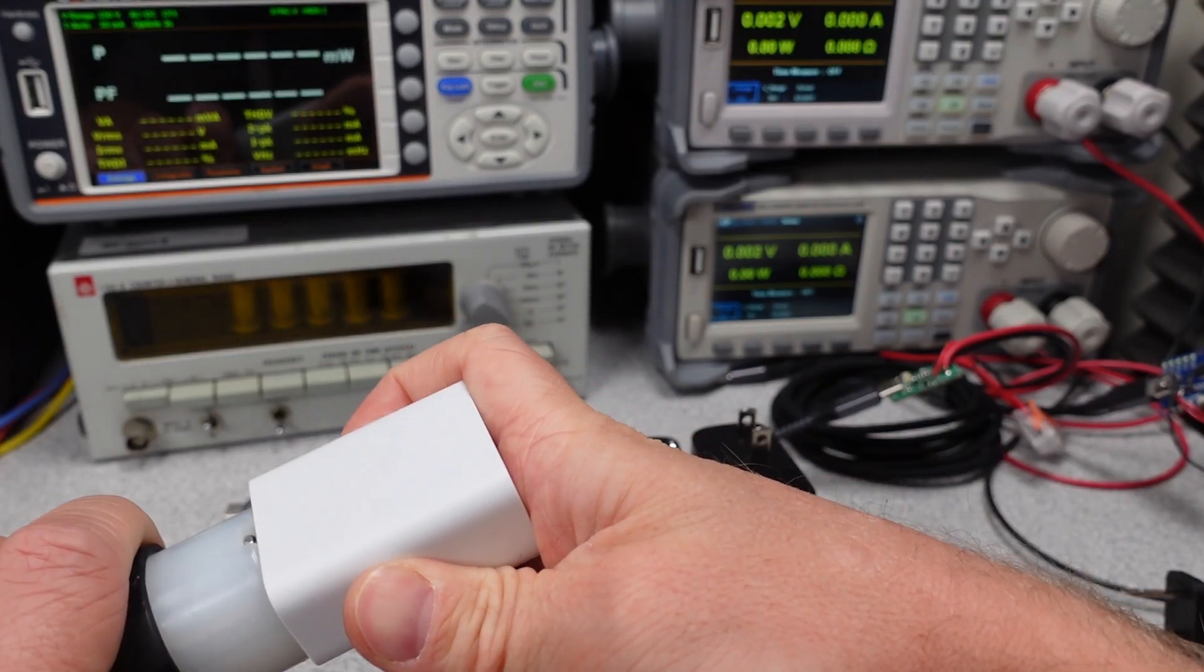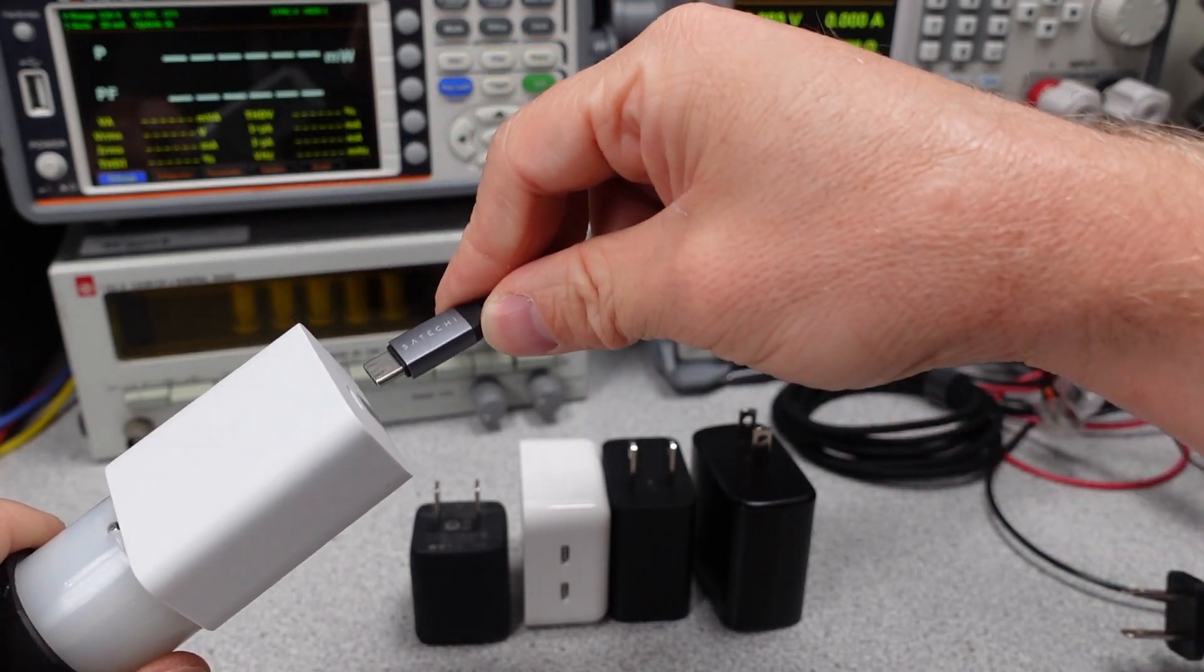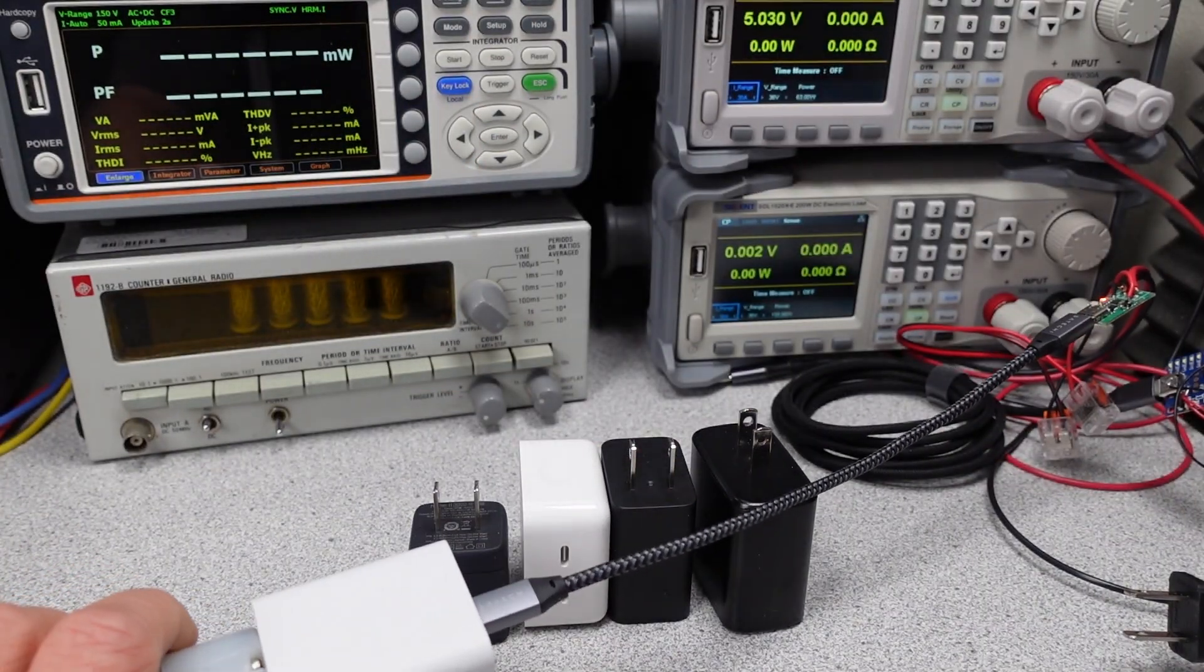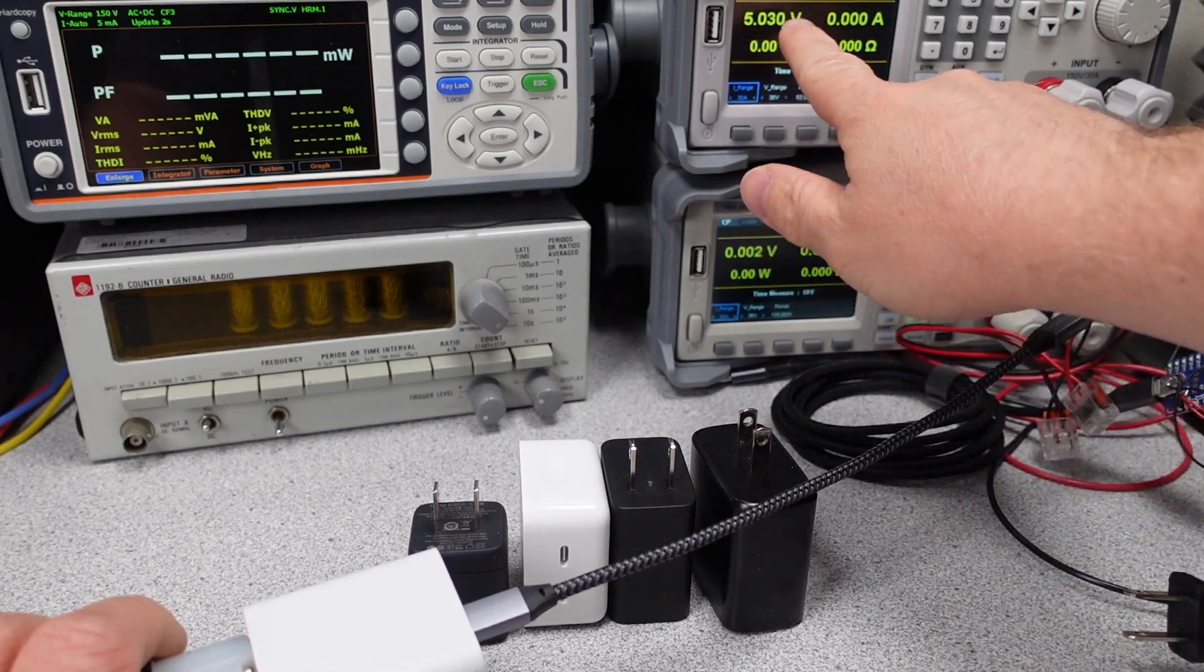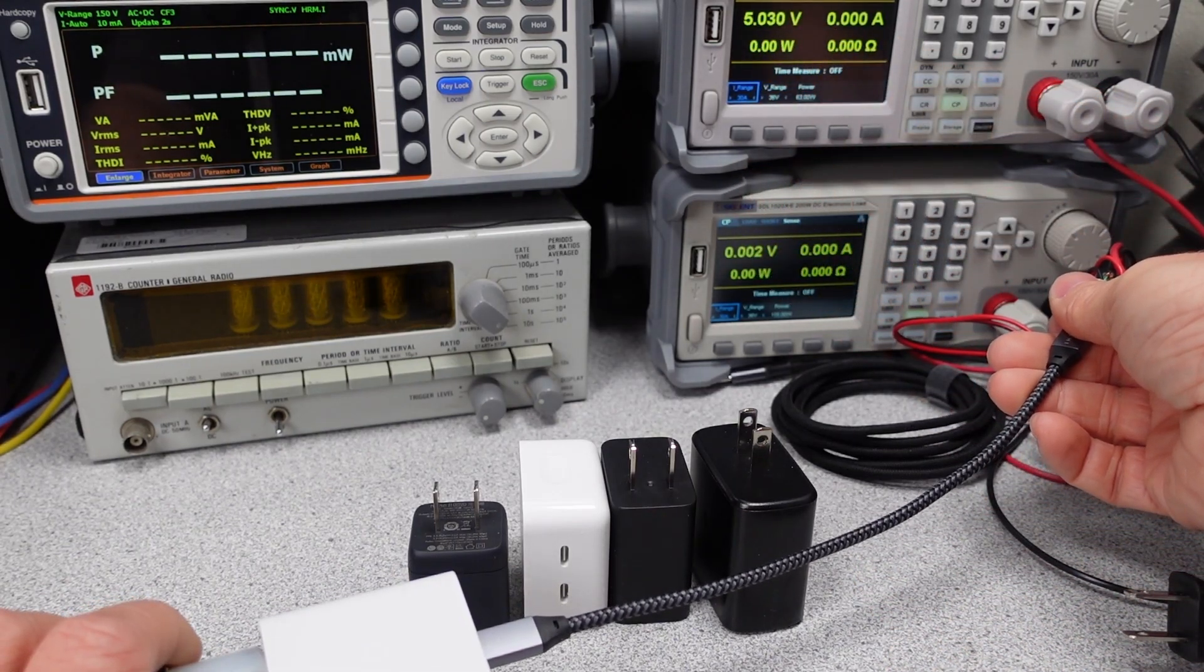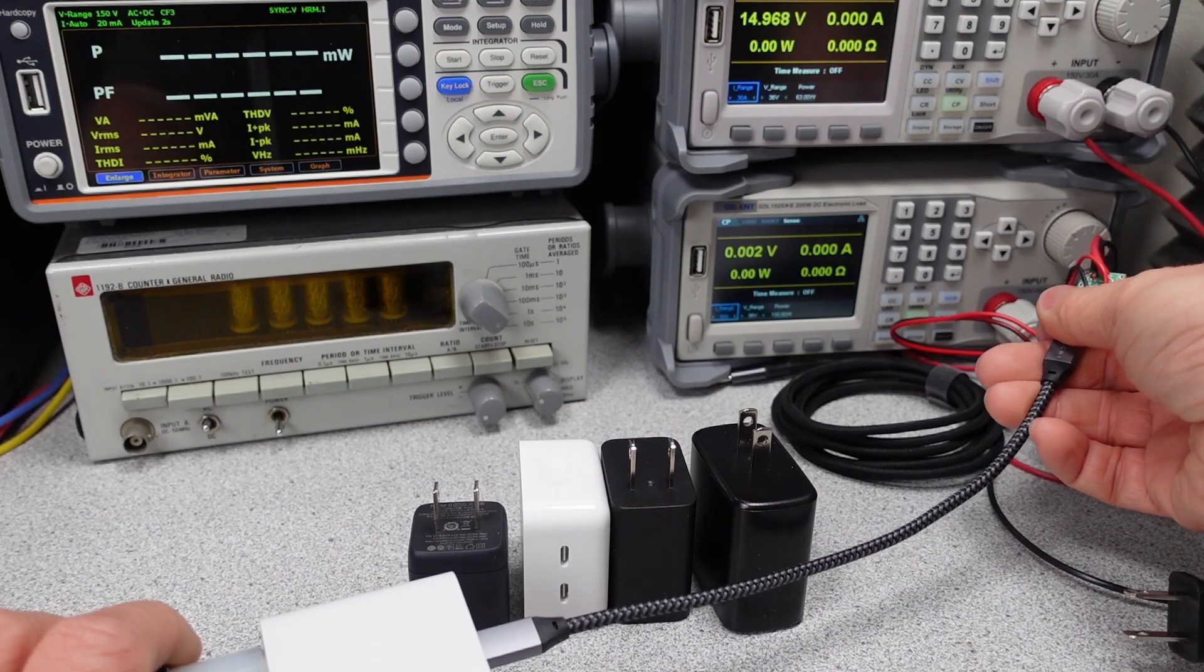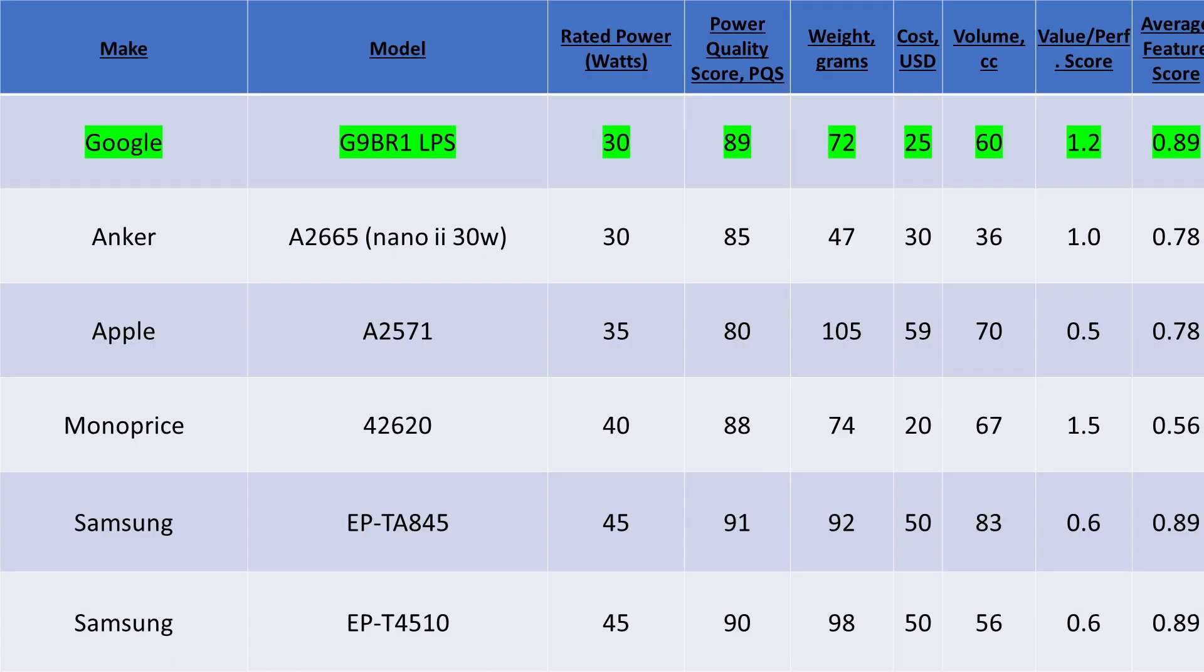In this power range, you start to get power adapters with more than one port. These will distribute power to either a USB-A or USB-C or two USB-C ports. The dual Apple 35W, with the ports on the side, doesn't make the top of the list or anywhere near it. The top of the 30W range is the Google G9BR1LPS. Not as good as their MST3K 5W adapter.